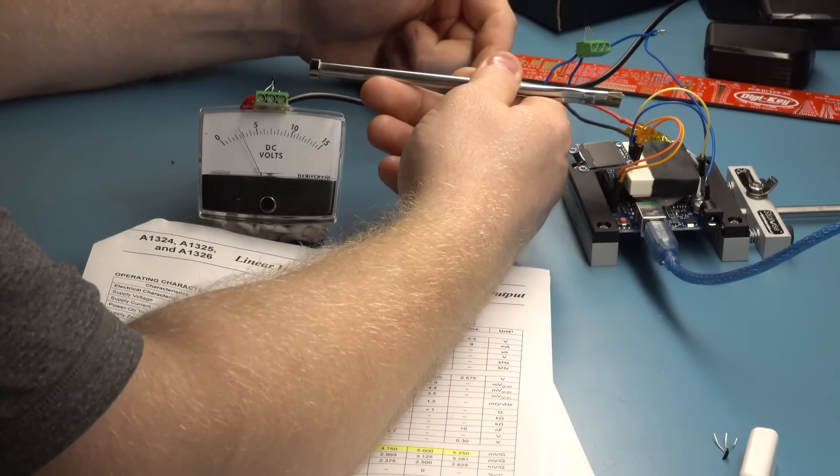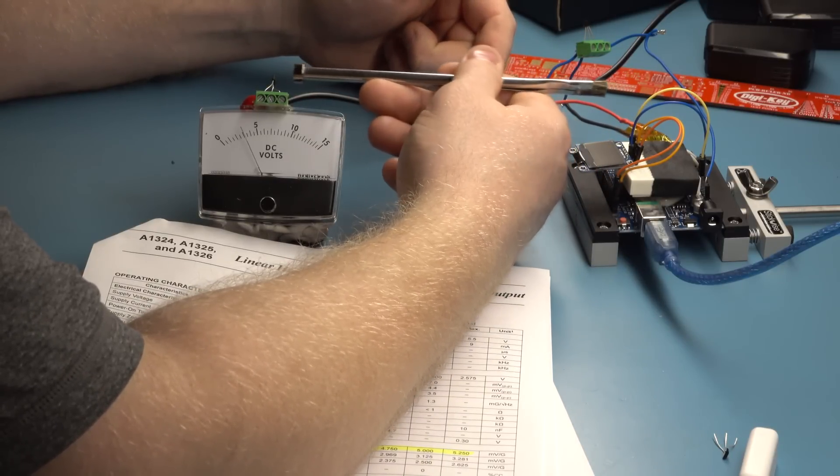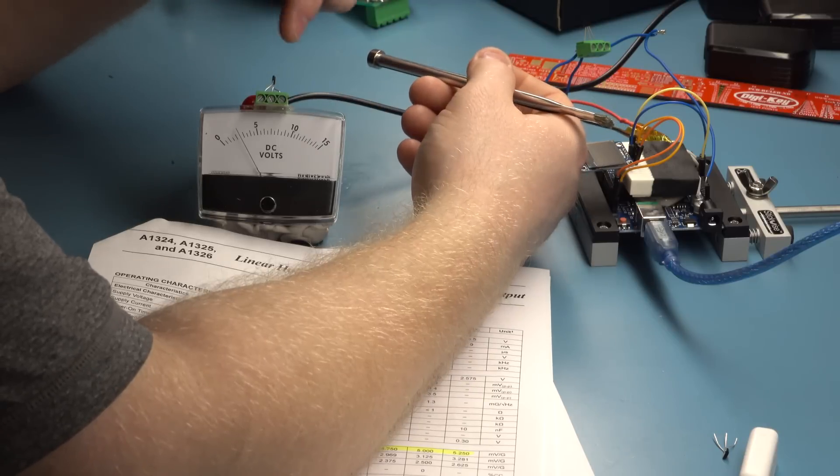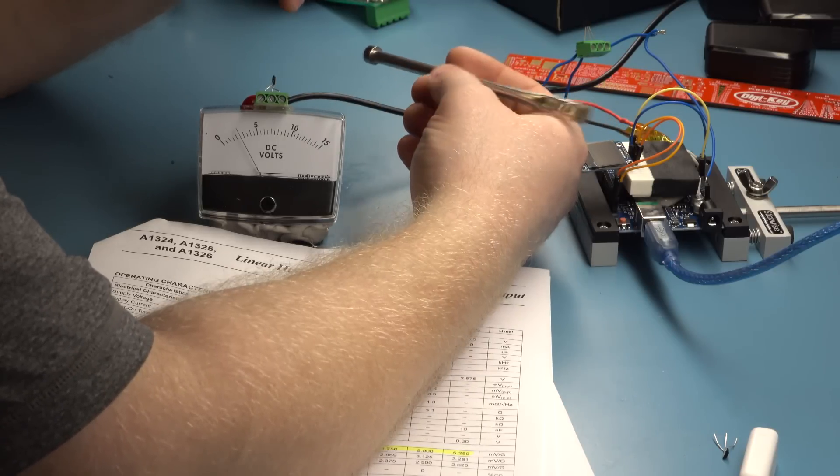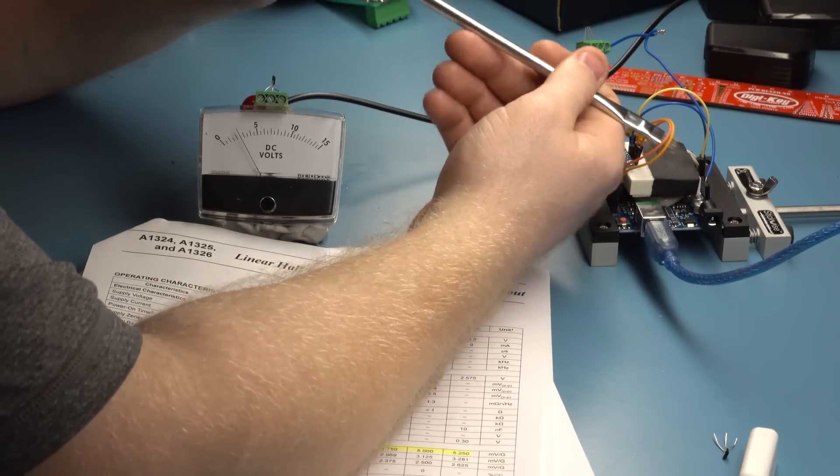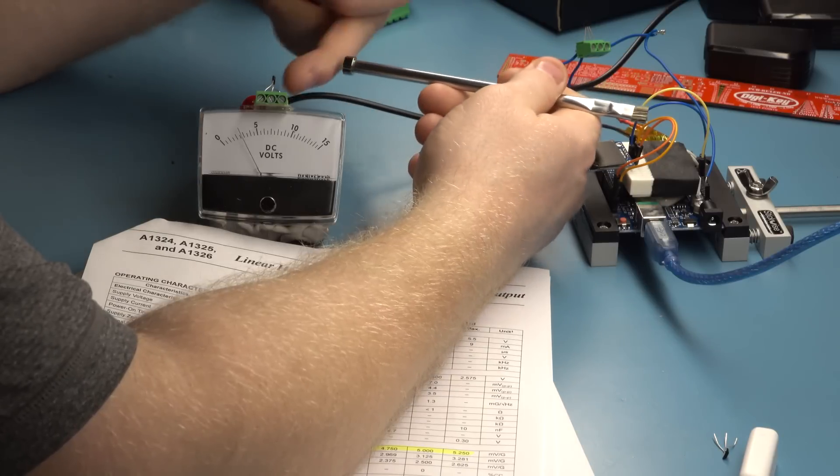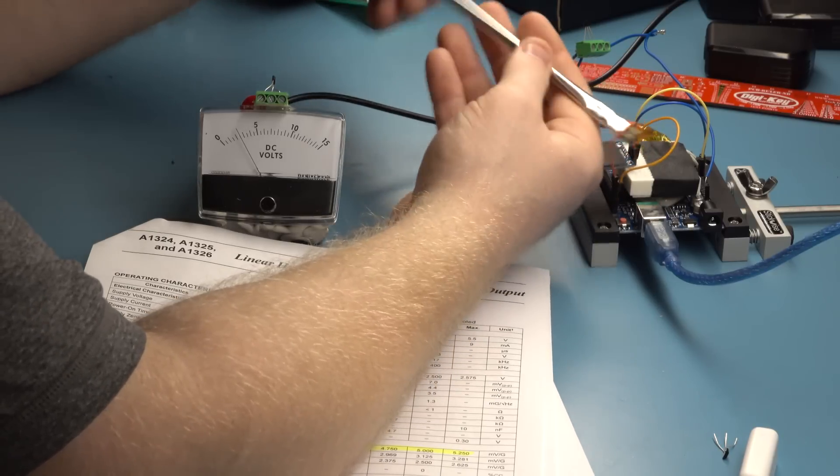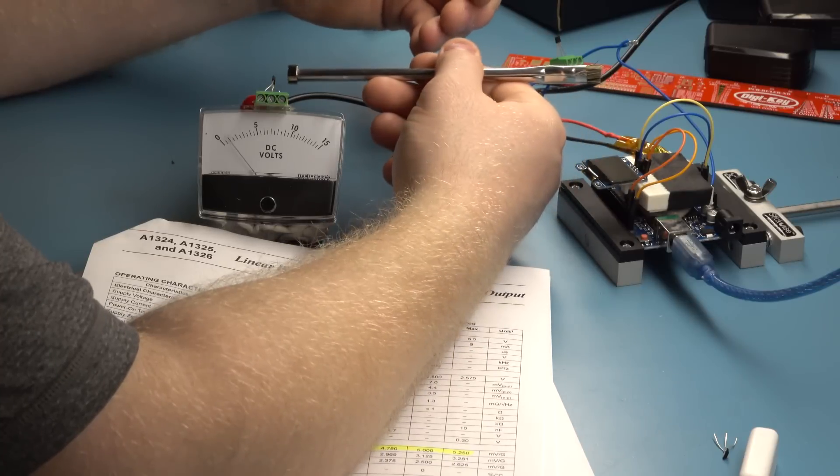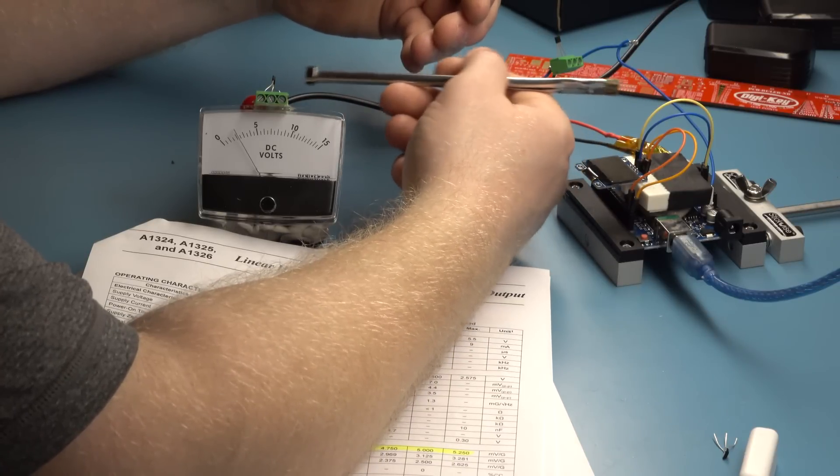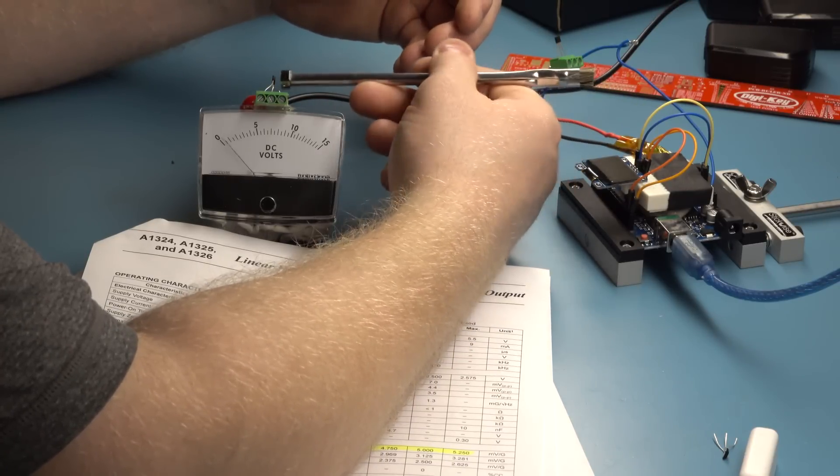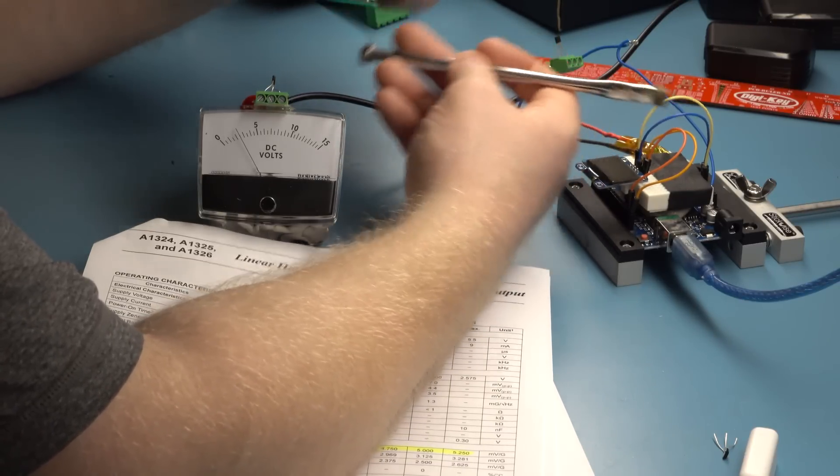So you can see as we get closer we get a larger voltage and for this sensor from 2.5 volts to 5 volts indicates that this is the south pole of the magnet facing the front of the sensor. If I flip it you'll see that we get from 0 to 2.5 volts and that means that this is the north pole of this magnet.